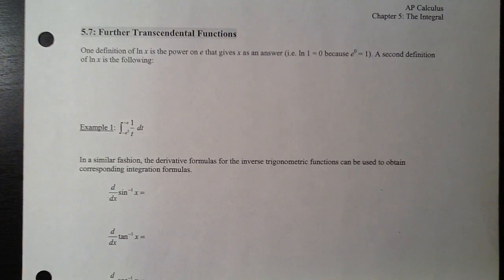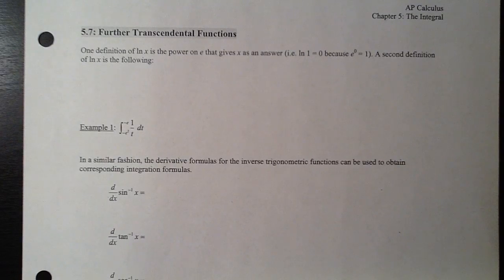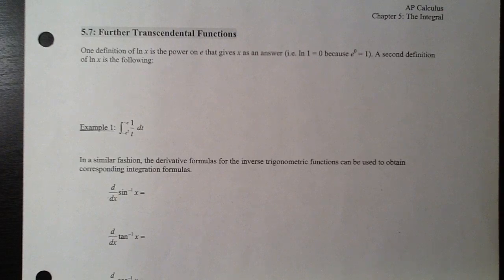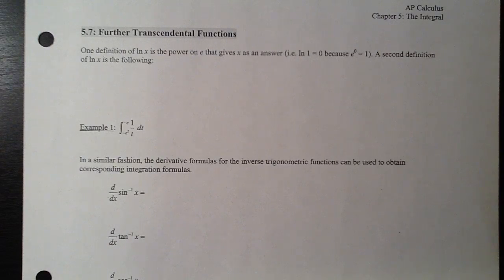We are on to our last section, 5-7, which is split into two pretty different pieces. What we're doing in 5-7 part one is talking about further transcendental functions. Transcendental functions are basically non-algebraic functions — your exponential, logarithmic, trig, things like that. Anything polynomial or rational is called an algebraic function. The first thing I'm going to talk about briefly is an alternate definition of the natural log function.